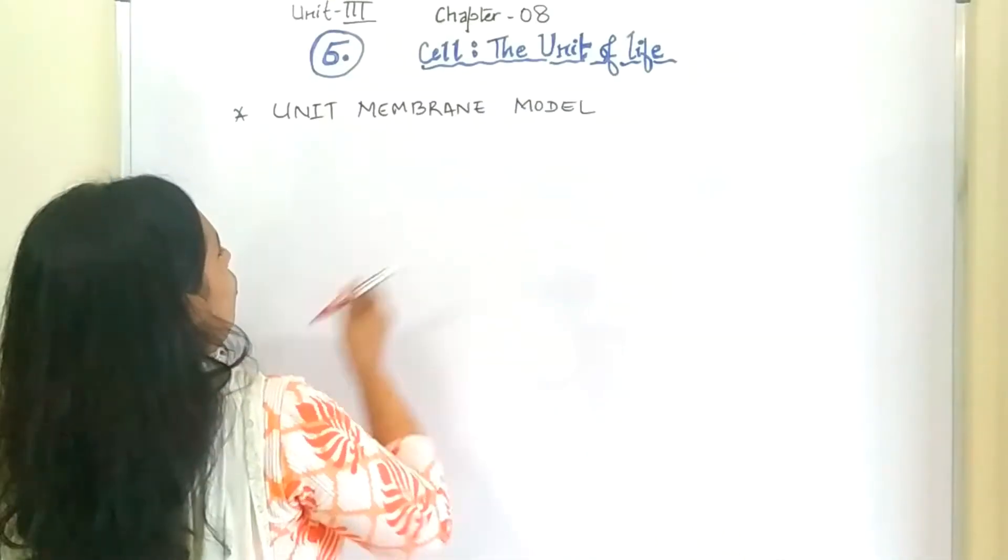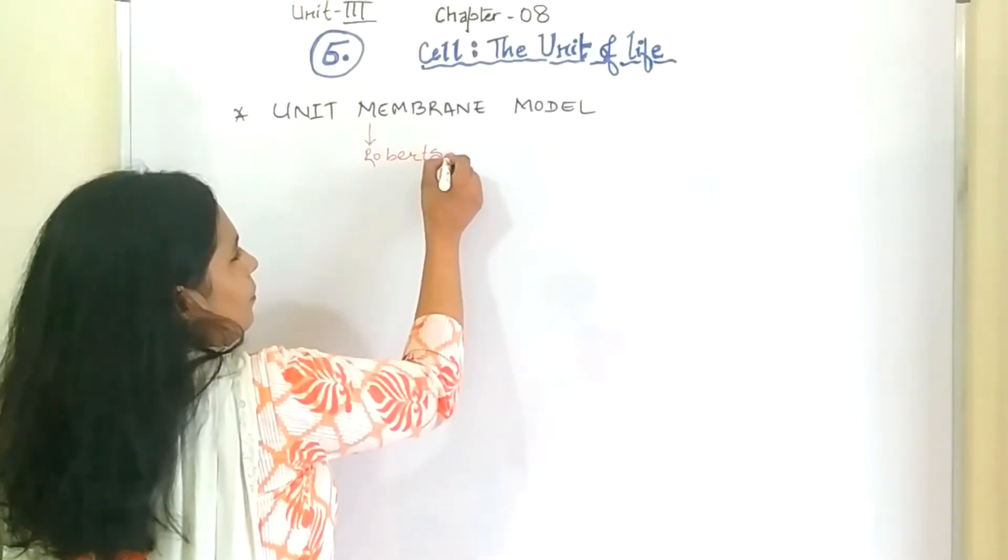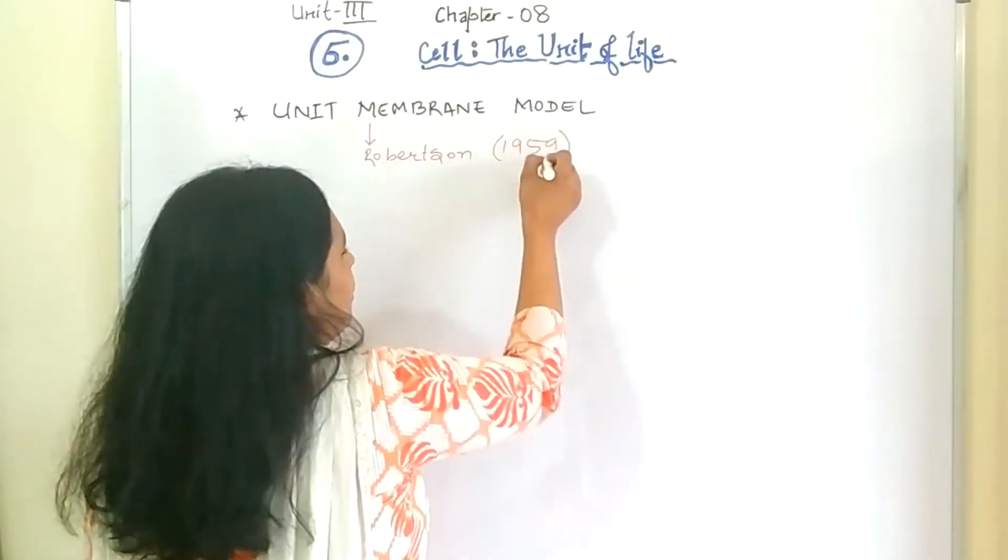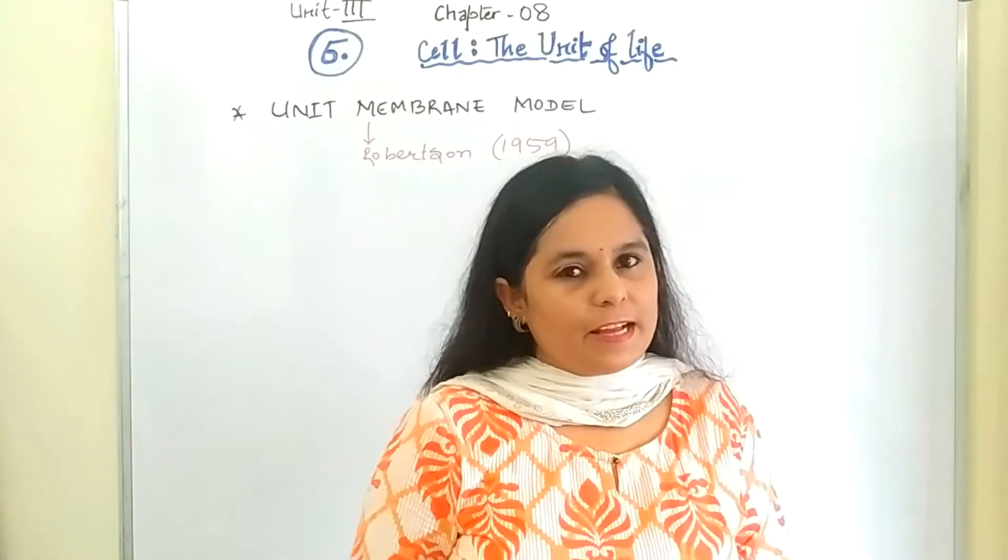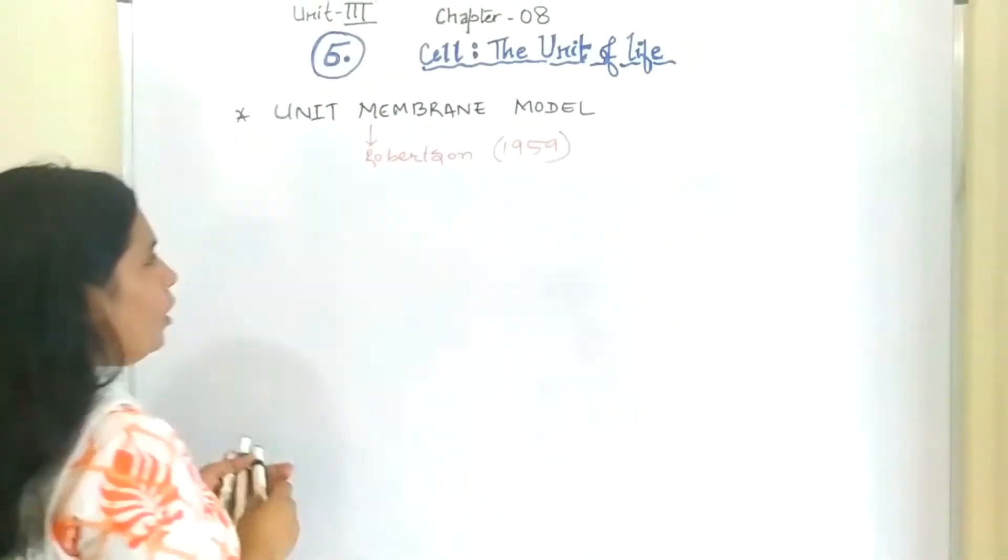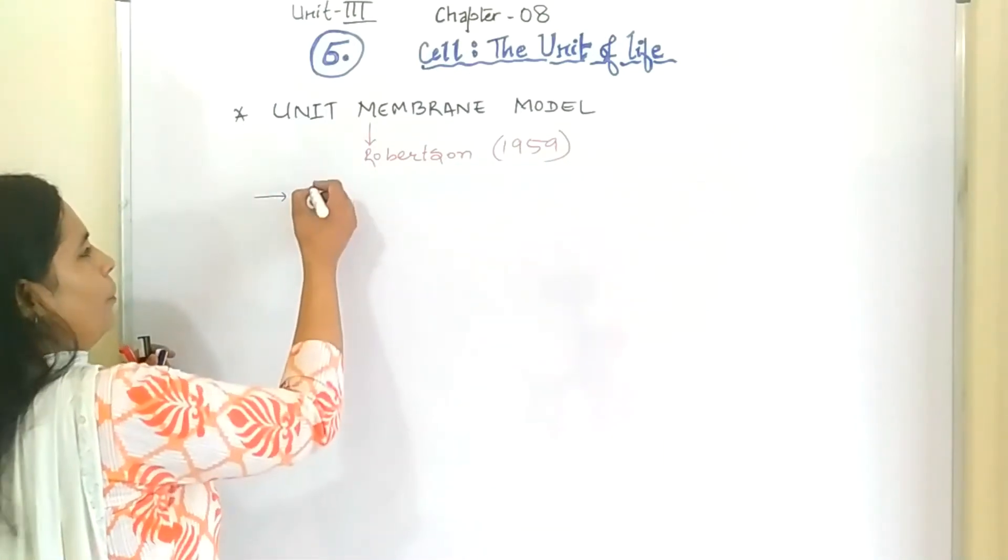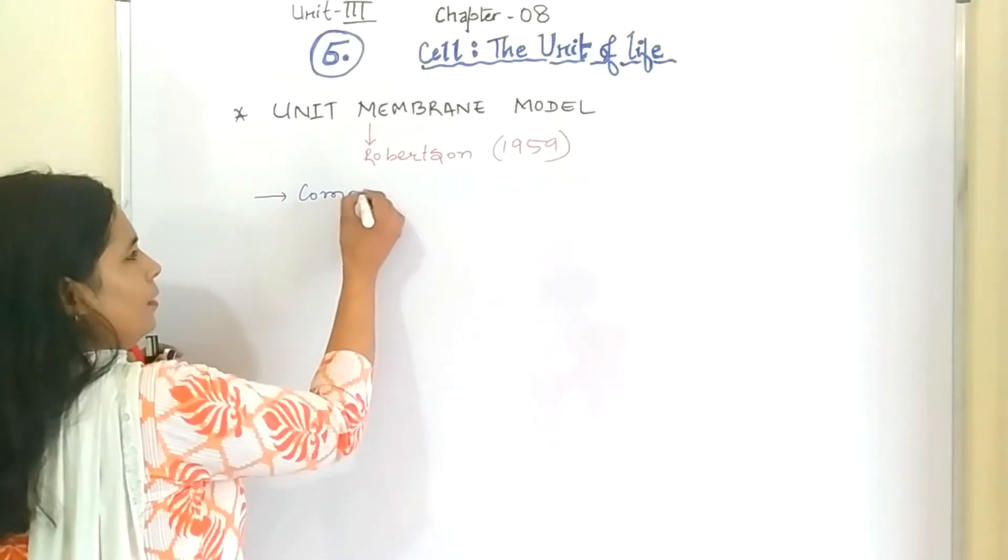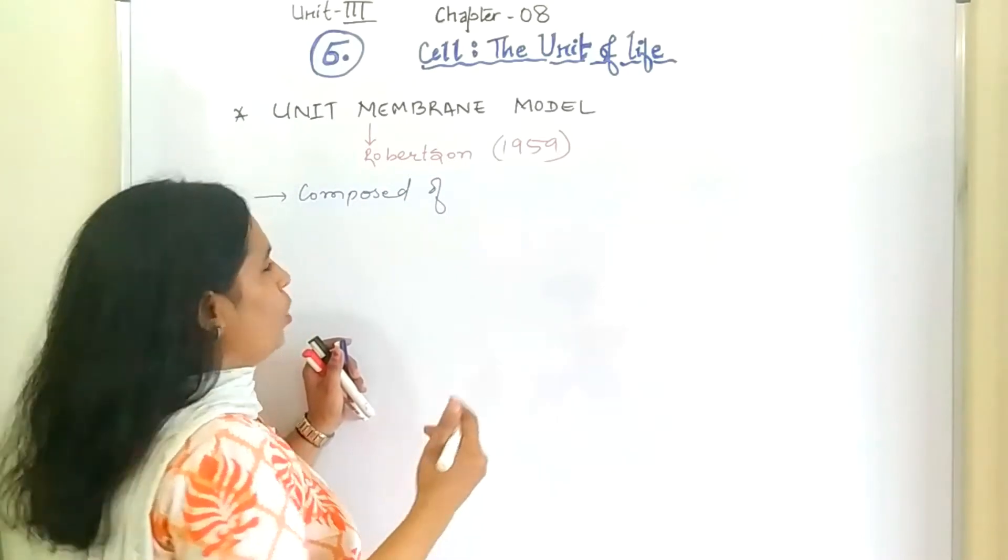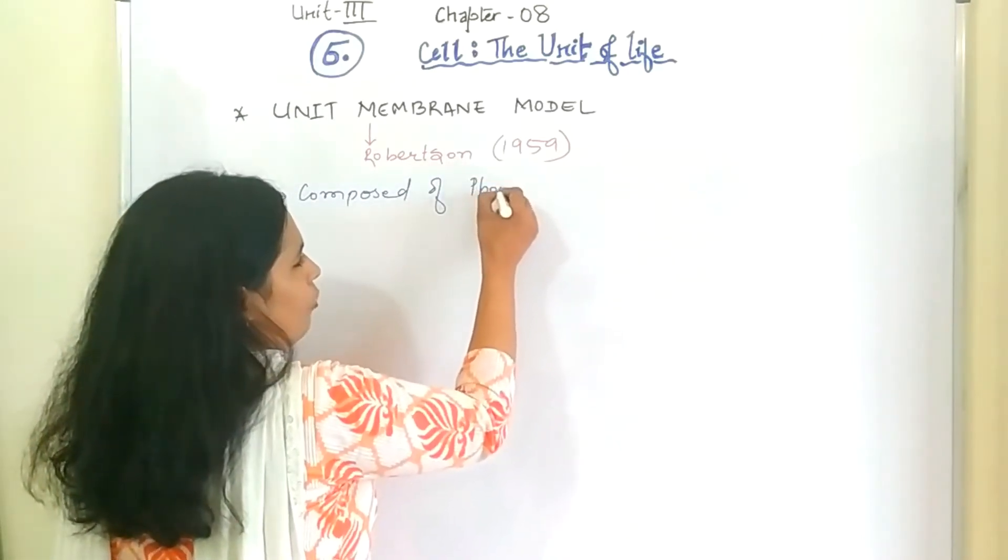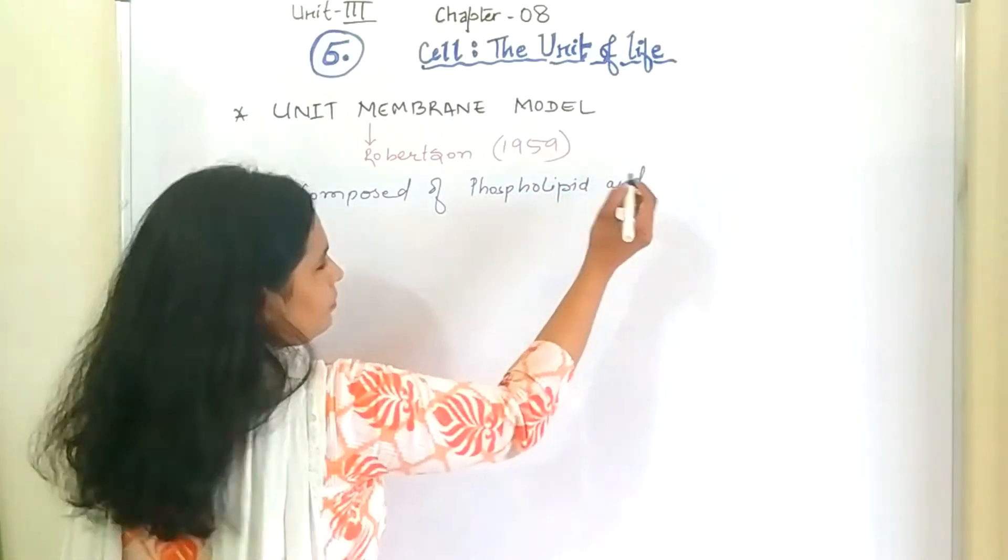This model was given by Robertson in year 1959. So Robertson has also deduced the structure of the plasma membrane. According to him, plasma membrane is made up of same component composed of same what you have learned in sandwich model. That is phospholipid and protein.